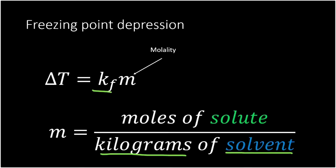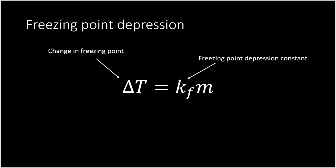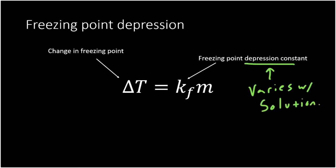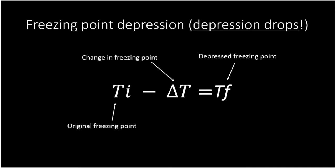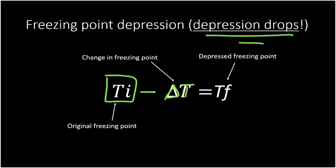What about this KF? That turns out to be the freezing point depression constant, and it varies based on the solution. Some solutions have high KFs and some have low KFs. A very high KF means there's a large change in freezing point when I add solute; a very small KF means there's a small change. Once you've calculated the change in freezing point, you can find the new freezing point by taking the original freezing point Ti and subtracting the change. Because it's freezing point depression, it drops. So if the original freezing point was zero and it drops by five, the new freezing point is minus five.